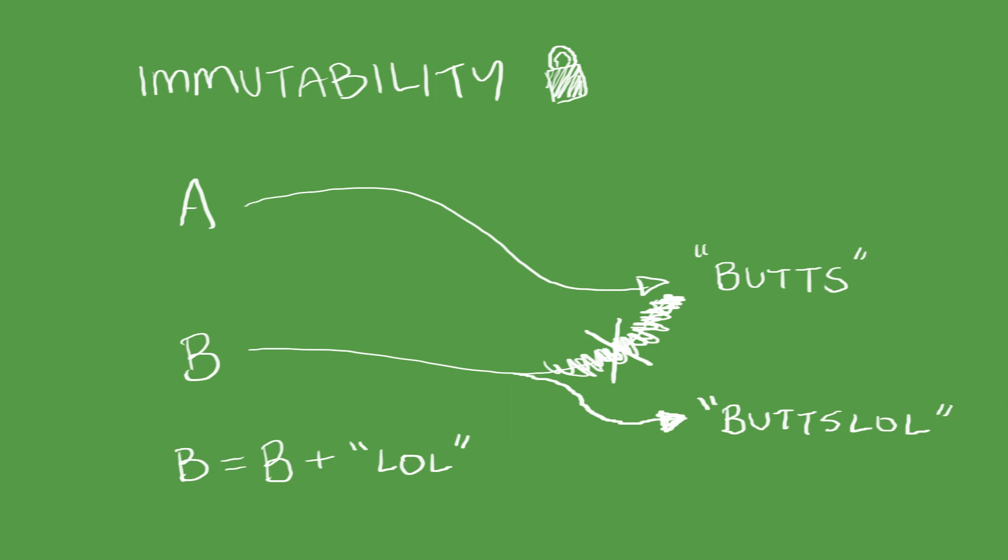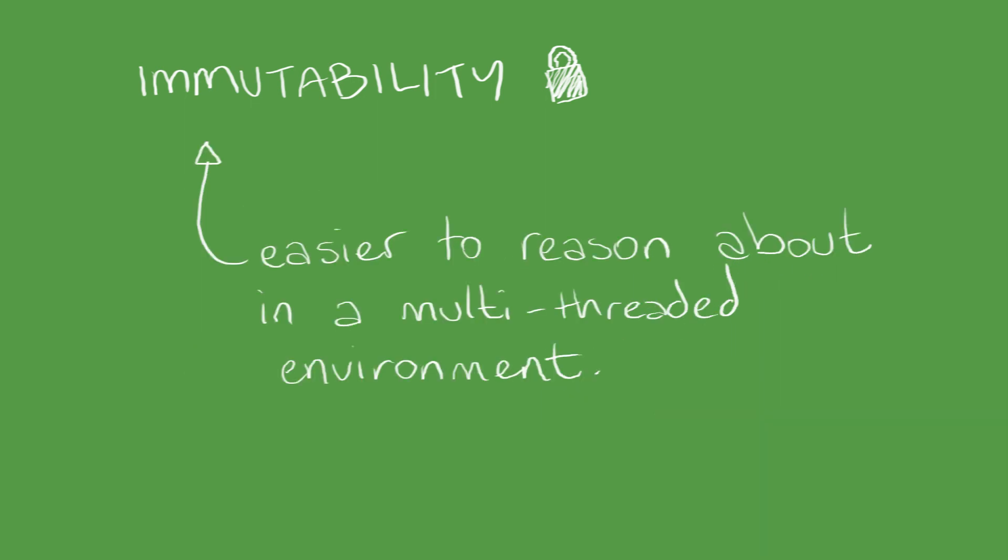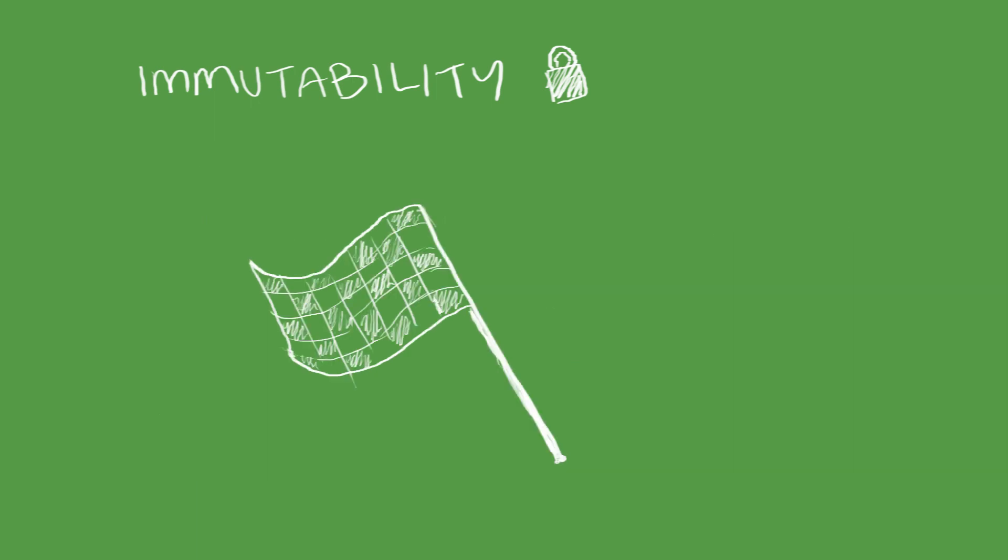We'll talk about the downside of this shortly, but the upside of immutability is that the object you're working with is very easy to reason about, especially in a multithreaded environment. Nasty race conditions are a lot harder to encounter with objects that cannot be changed.